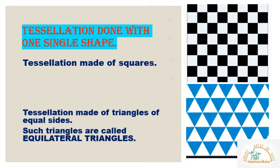The second figure is an example of tessellation made of triangles of equal sides. Such triangles having all three sides equal are called equilateral triangles.